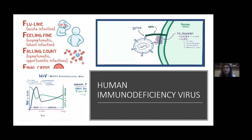With the help of another GP120 protein, it attaches to a co-receptor, which can be CCR5 or CXCR4. After this gets attached, it goes inside. This process must happen for it to enter. We have heard that many people are resistant to HIV — that's because they have some homozygous or heterozygous mutations in these receptors, which is why HIV can't enter their cells.